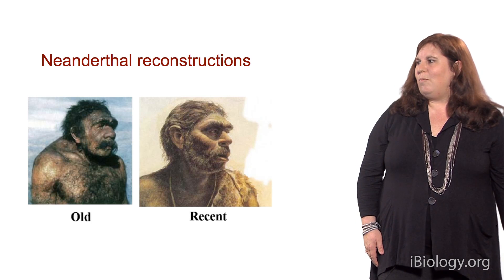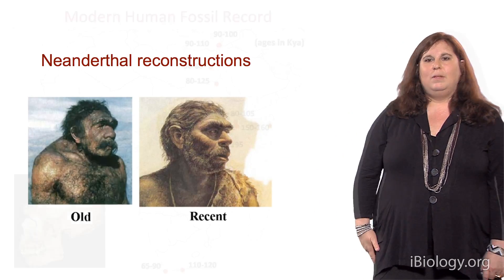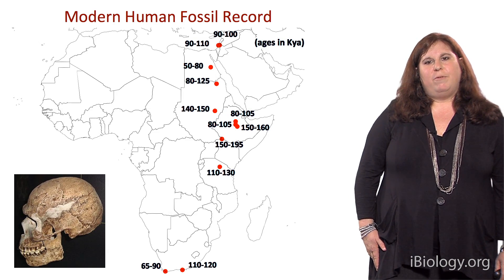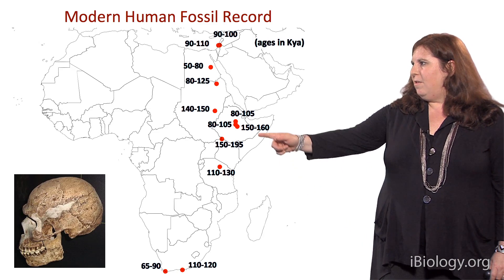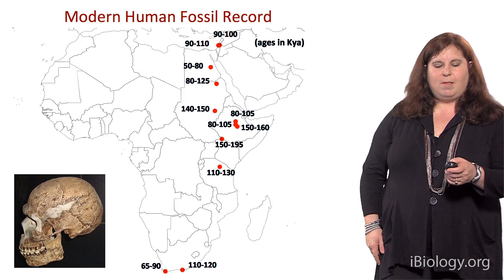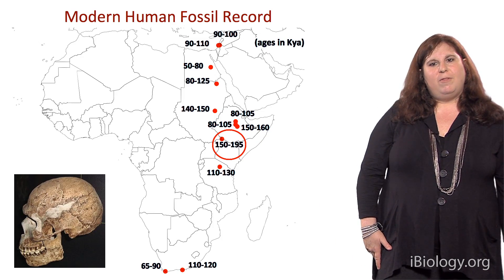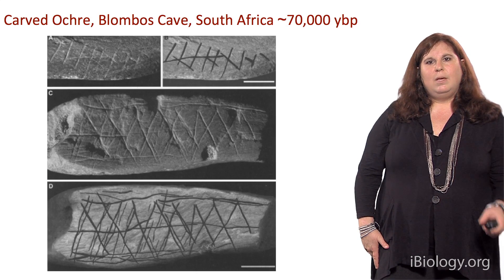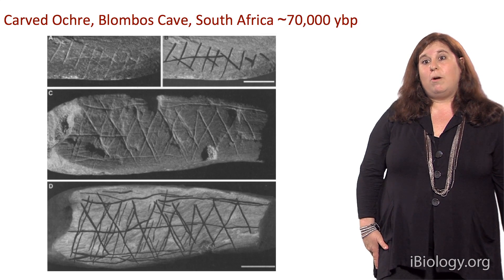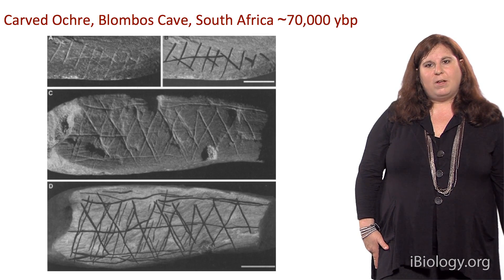Here are some reconstructions of Neanderthal — the old reconstruction and the more recent one. Anatomically modern humans, Homo sapiens sapiens, arose approximately 200,000 years ago. These red dots represent locations where fossils of anatomically modern humans have been found. The oldest fossil is dated to around 150,000 to 195,000 years ago in southern Ethiopia. We also see evidence of early modern human behavior dated to 70,000 years ago, or even as old as 120,000 years ago in caves in South Africa and East Africa.